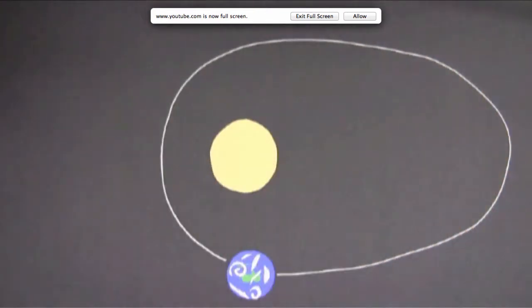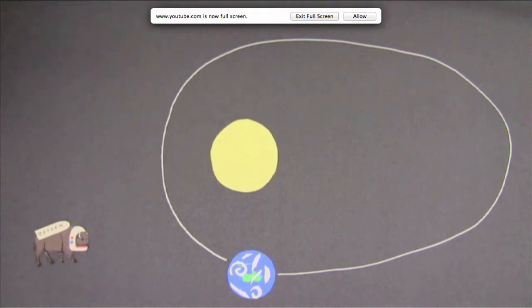You usually see it drawn like this. Lots of people think, Hey, this must be why we have seasons. When the earth is close to the sun, we have summer. And when the earth is far away from the sun, we have winter. But that's actually not true.